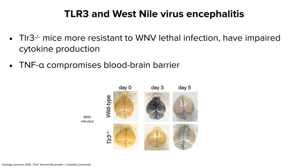Primary dengue infection is mostly asymptomatic or a febrile illness with bone aches — that's why it's called break bone fever. It's self-limiting. Serious complications include hemorrhagic fever or shock syndrome, but that's one in 14,000 cases. There are four serotypes of dengue. If you are infected with a second serotype, you don't have protection from the first, and the incidence of severe disease increases dramatically — 1 in 90 or 1 in 50 — compared to 1 in 14,000 after a primary infection.